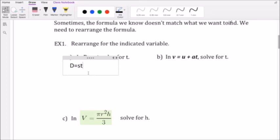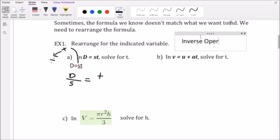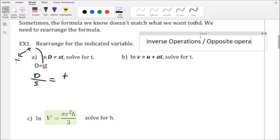So we know this s right here is a multiplication, so we move it over and it's going to become a divide. So our next part is distance divided by speed equals time. All the way through this we're going to have to work on our inverse operations, which are the same as opposite operations.